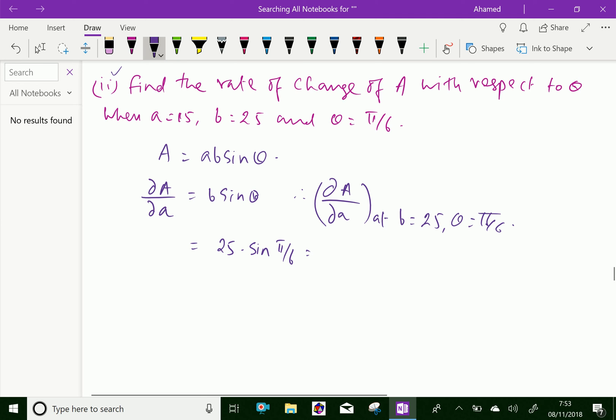Here, it equals 25 × sin(π/6) = 25 × 1/2 = 12.5.